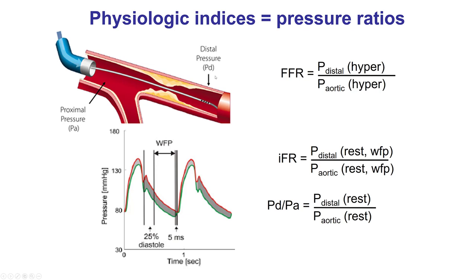There are two broad categories of physiologic indices measured in the cath lab: those using hyperemia and the non-hyperemic ones. The most commonly used hyperemic index is FFR, or fractional flow reserve, defined as the pressure distal to the lesion — measured using a pressure wire — divided by the pressure in the aorta measured through the guide catheter. This ratio under maximal hyperemia, usually achieved by administering adenosine either intravenous or intracoronary, is the fractional flow reserve.